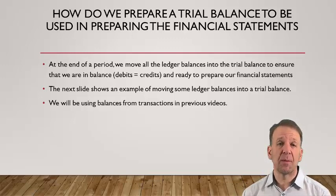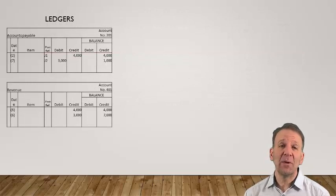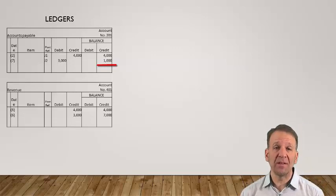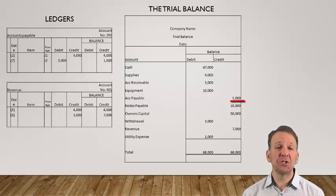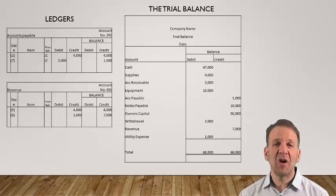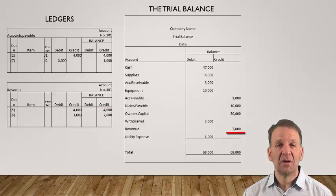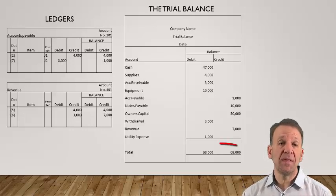We'll be using ledger balances from our transactions in previous videos. You can see we have an accounts payable ledger with a thousand dollar credit balance. We move this credit balance into the trial balance on the right side of your screen. We would do this for every ledger account balance — we take the ending balance in every ledger and move it over into the trial balance. You can also see the revenue ledger with an ending credit balance of seven thousand dollars. We would move this balance over into the trial balance. Once all the balances are moved into the trial balance, we will total the debits and credits and they should be equal.